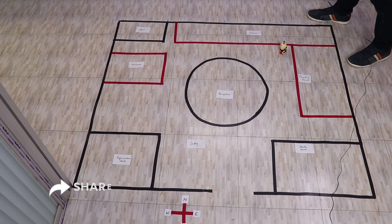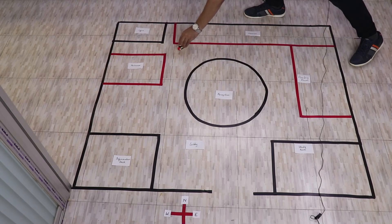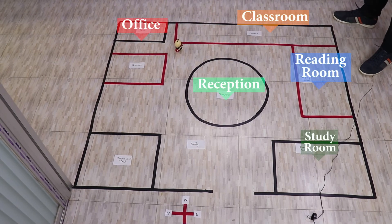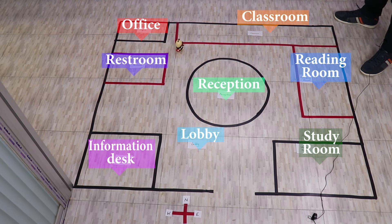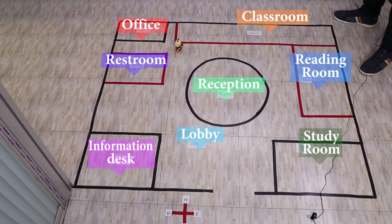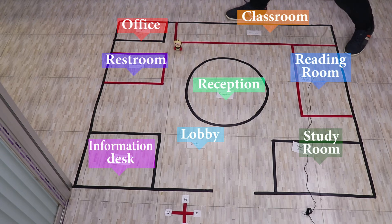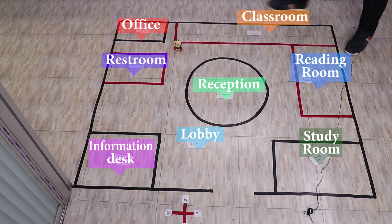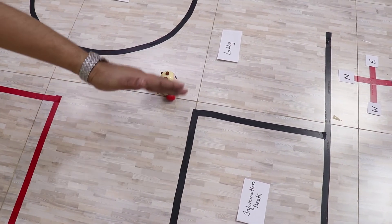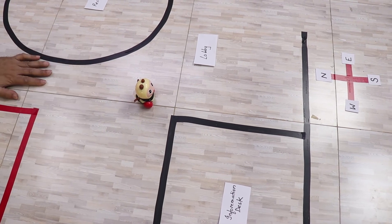The speaker may say: keep going ahead and you will find yourself in the middle between the restroom and the office. The speaker may then say: if you turn from there southward — take your left southward — and again keep moving ahead like this, you will find back the lobby, and on the right side you will find the information desk.